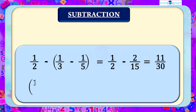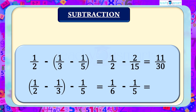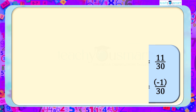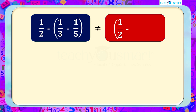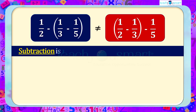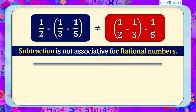The second grouping: 1/2 − (1/3 − 1/5) = 1/6 − 1/5 = −1/30. That is, (1/2 − 1/3) − 1/5 ≠ 1/2 − (1/3 − 1/5). Therefore, subtraction is not associative for rational numbers.